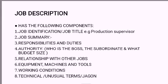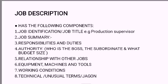The job description has the following components: job identification such as job title — for example, production supervisor — job summary, responsibilities, duties, authorities, relationships with other jobs, equipment, machines, tools, working conditions, and technical jargon.